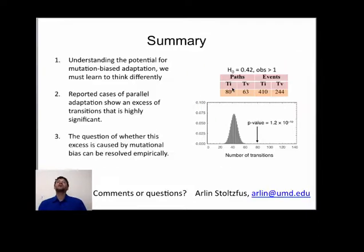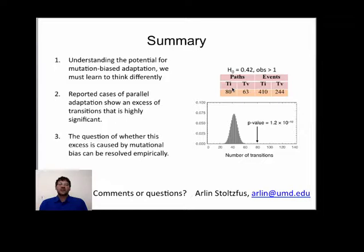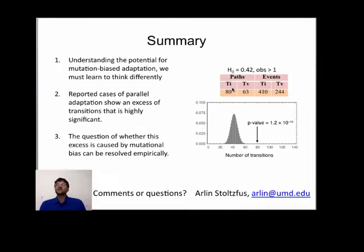To conclude: understanding the potential for mutation-biased adaptation requires looking at evolution a little bit differently, and if we do that, this leads to novel, testable hypotheses. One of them is to look for transition-transversion bias in cases of parallel adaptation — and when we look for that, we find it: we see an excess of transitions. This pattern appears to reflect mutation bias, but we need to do more tests to be sure. Thanks for listening.